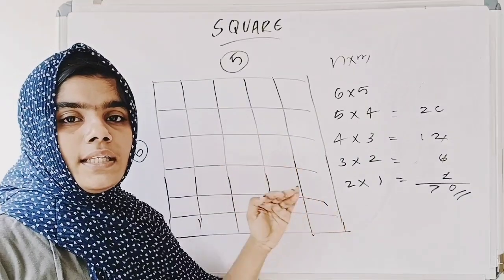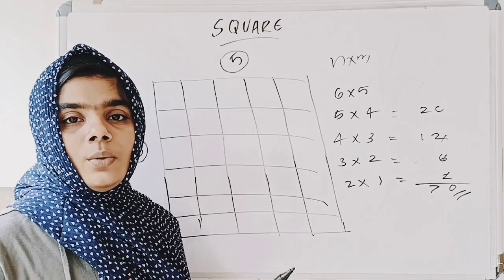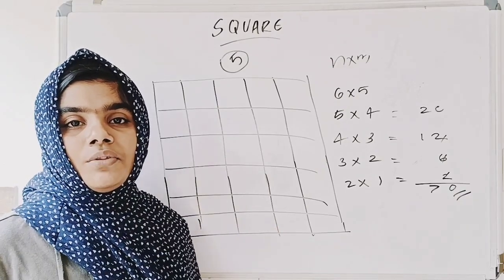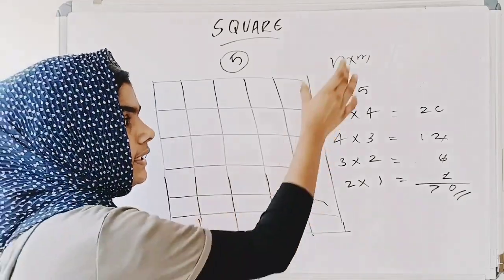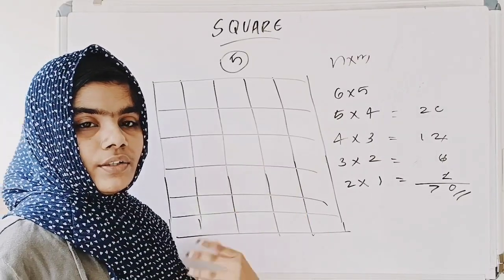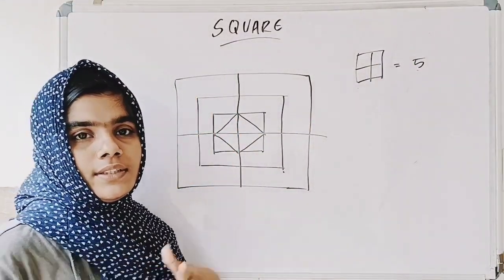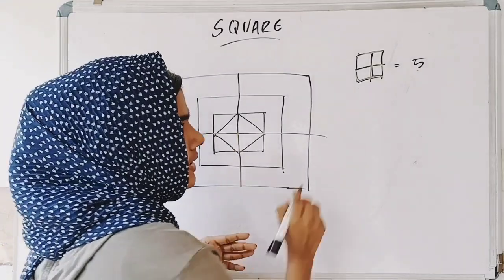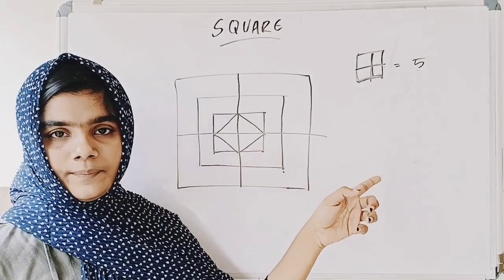Even for n into m, we can do this method. We can also use n into n, applying n into n plus 1 into 2n plus 1 divided by 6. We can do n into n or n into m — that is the difference between the two problems. Let's talk about the method.